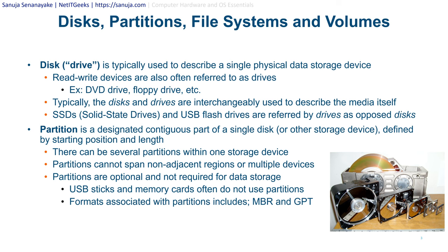For example, USB sticks and memory cards often do not use partitions. Formats associated with partitions include two main types called MBR and GPT. There are other partitioning types used in Linux and other operating systems as well. Partitions are designated, well-defined starting positions and lengths of different sections of your disk or drive, and partitions are not needed for data storage, though they are used in Windows and Linux.